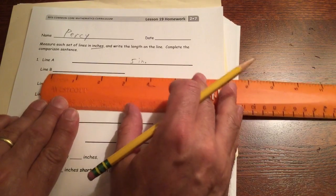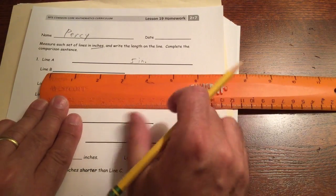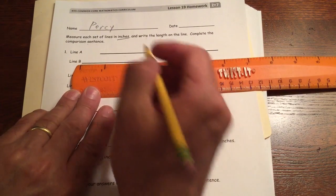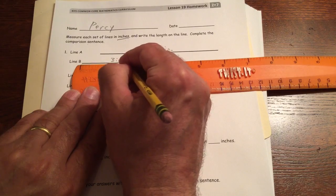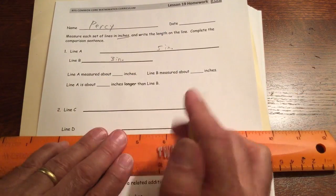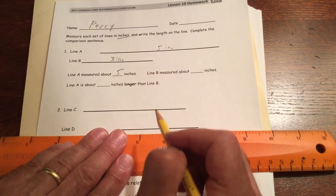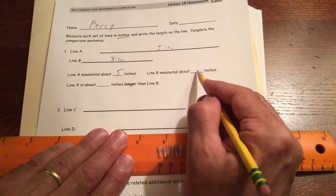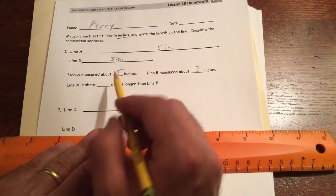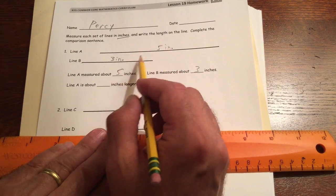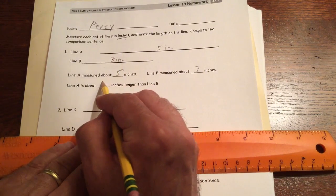Then line B. And then line B I'm going to measure here. That's 3 inches. Okay, so line A measured about 5 inches. Line B measured about 3 inches. Line A is about, well, 5 is 2 more than 3, so it's about 2 inches longer.